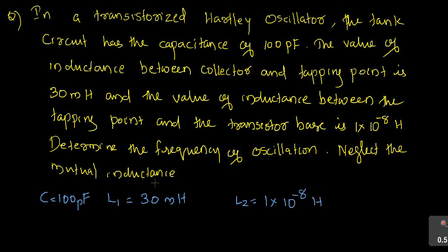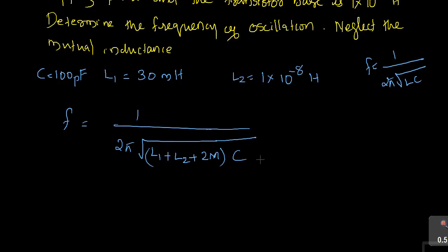The frequency of oscillation is equal to 1 divided by 2π√(LC), where L is L1 plus L2 plus 2M.